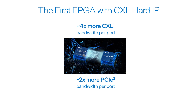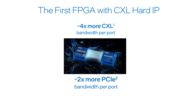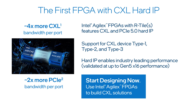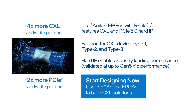In summary, Intel Agilex FPGAs with the R tile hard IP can support four times more CXL bandwidth and two times more PCIe bandwidth per port versus competitors' FPGAs. The Intel FPGA CXL solution includes hard IP for industry-leading bandwidth while also making more FPGA logic available for RTL design. The CXL soft IP support logic provides customers with a known working design that can be customized to individual needs. FPGAs and boards are shipping now — please contact your local Intel salesperson for more technical details, pricing, rollout schedules, and lead times.